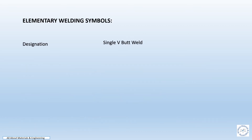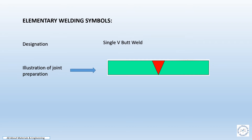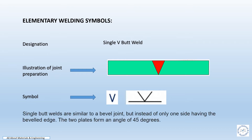Elementary welding symbol for single V butt weld. This sketch represents the illustration of the joint preparation in the material, and this is the symbol which will be provided in the drawing. Single V butt welds are similar to bevel joints, but instead of only one side having beveled edges, the two plates form an angle of 45 degrees.